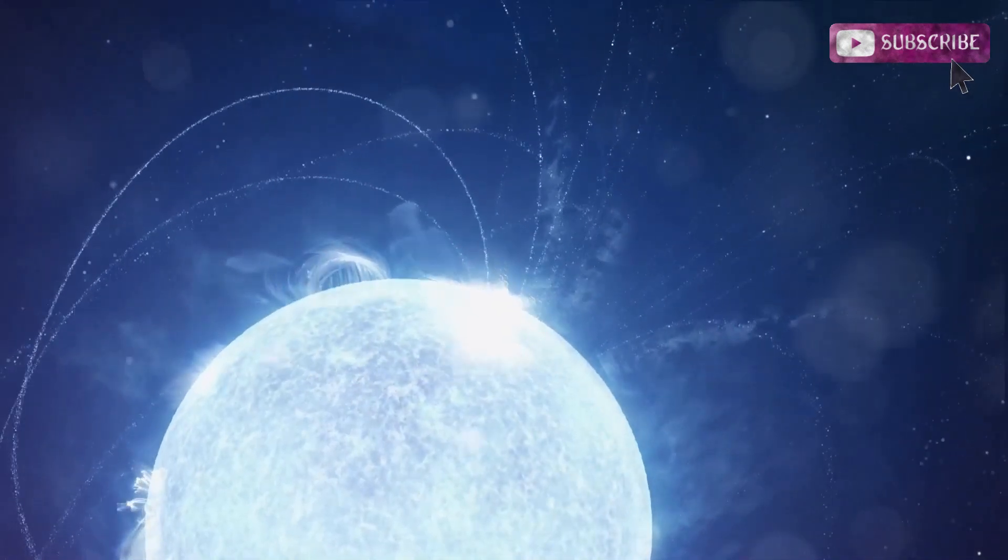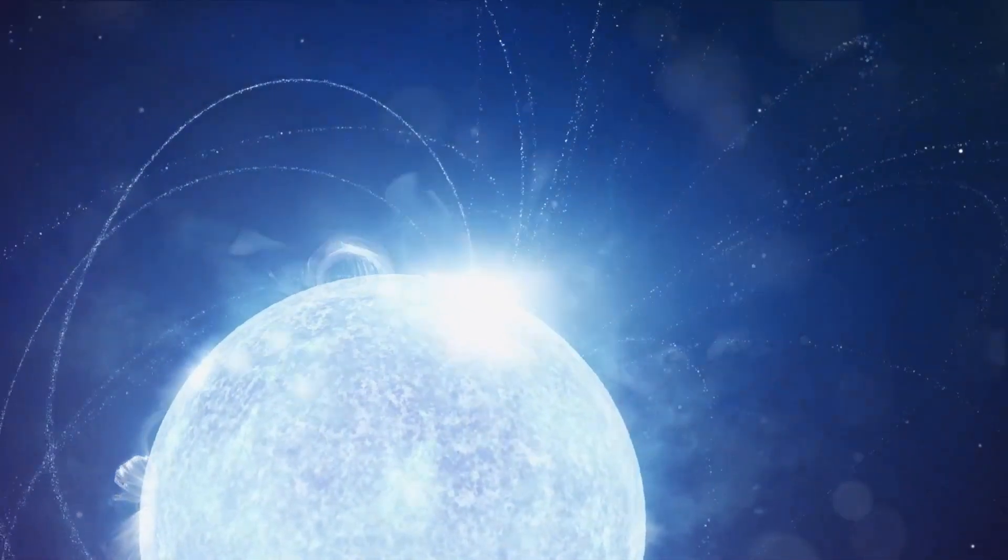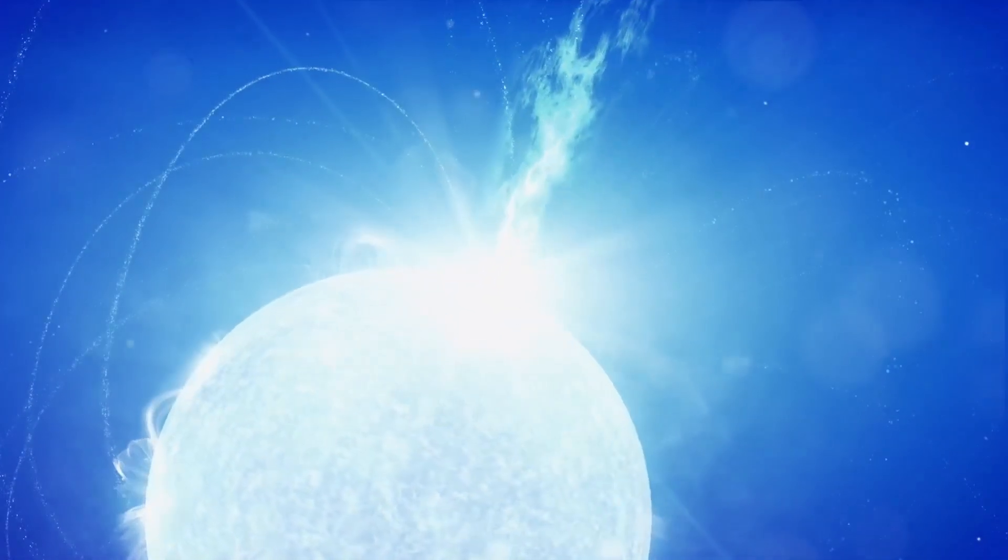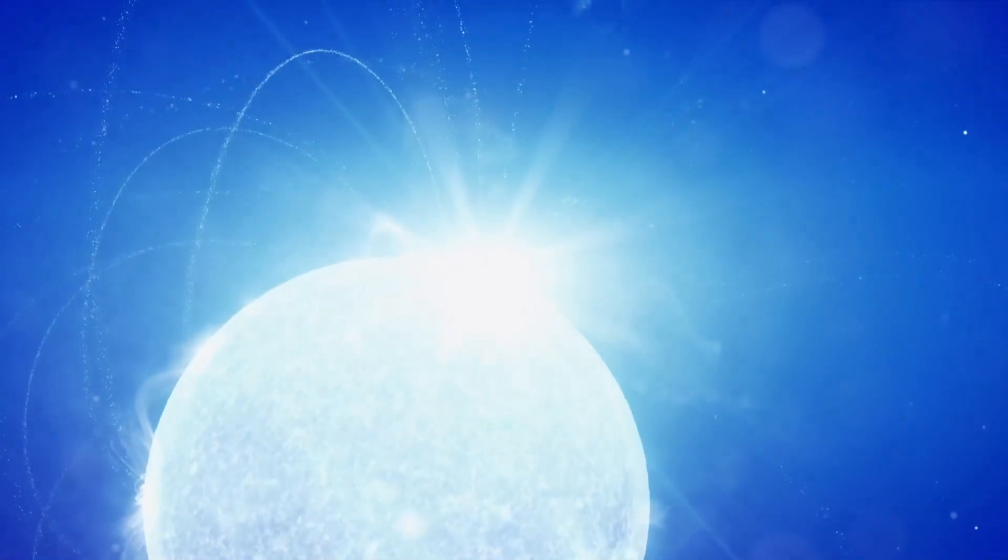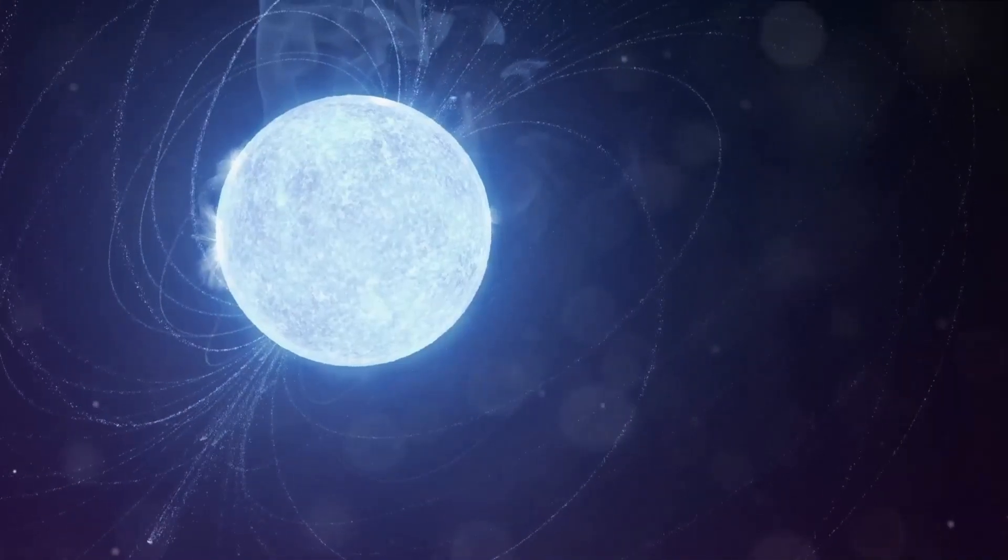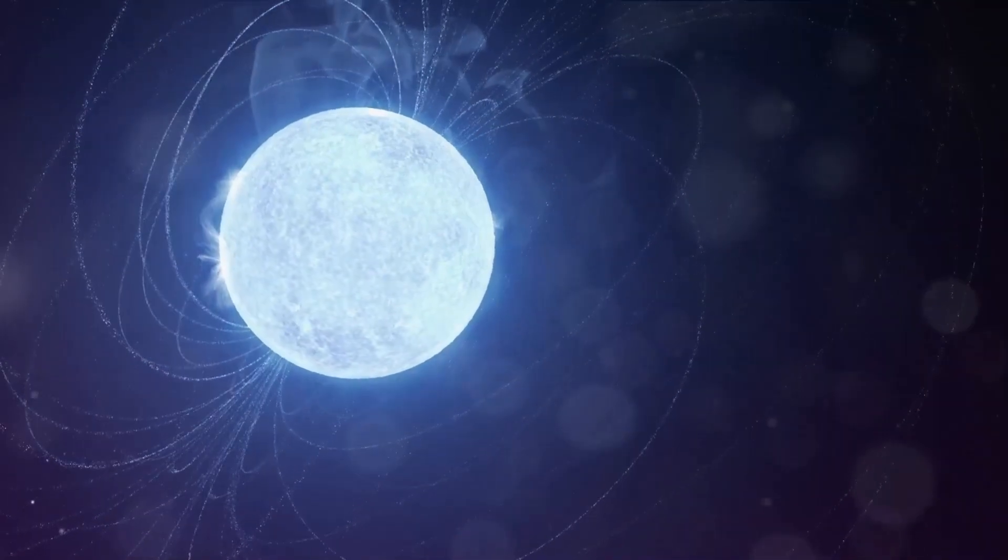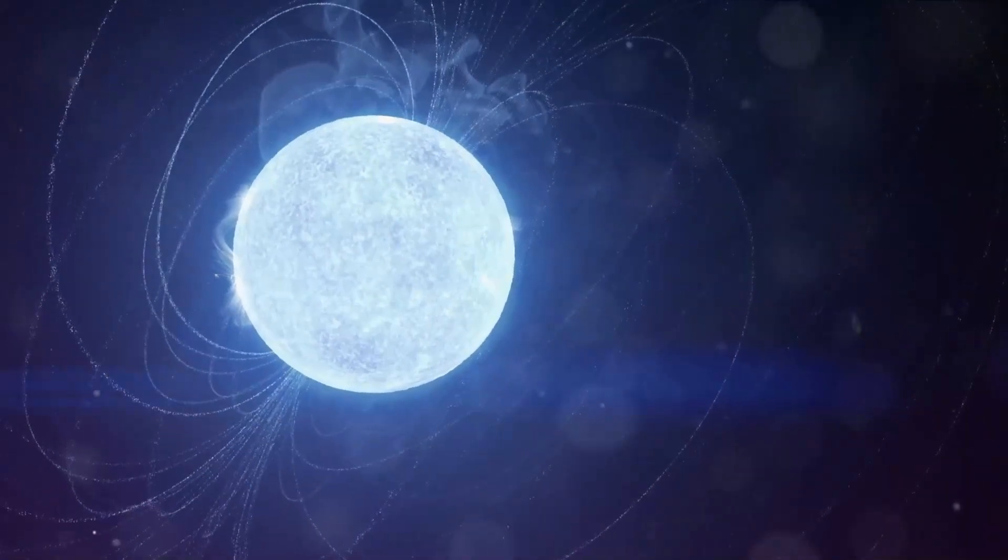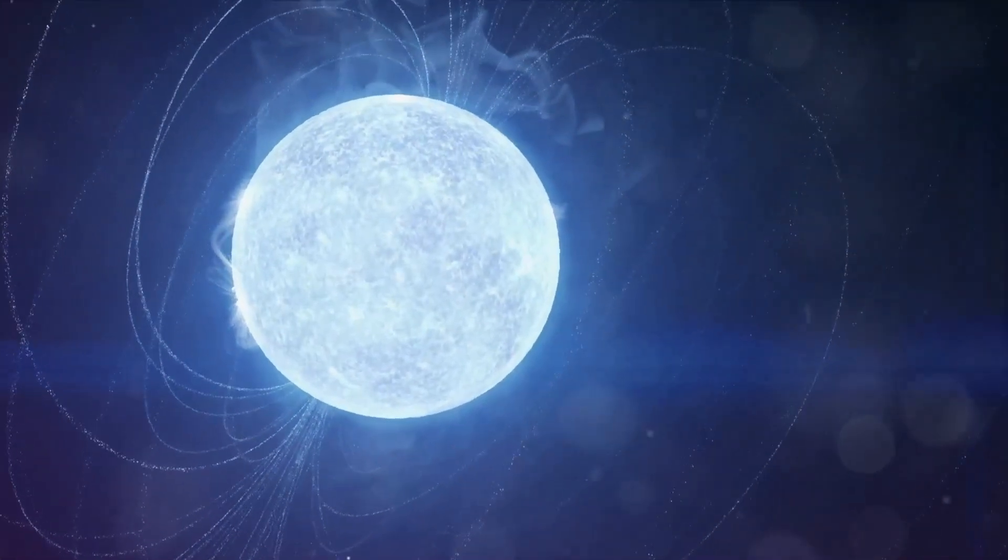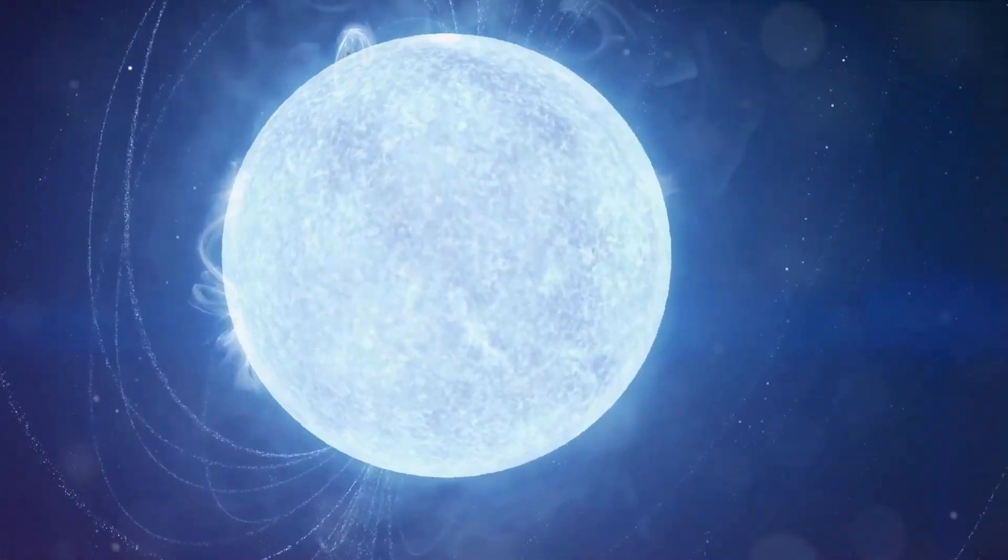Magnetars are a type of neutron star, the remnants of massive stars that have collapsed under their own gravity following a supernova explosion. But these are not your average neutron stars. They possess the most powerful magnetic fields known to exist in the universe, a staggering billion times stronger than the strongest magnets on Earth.